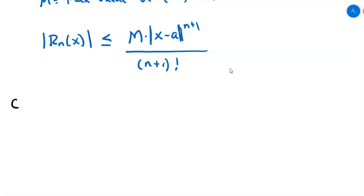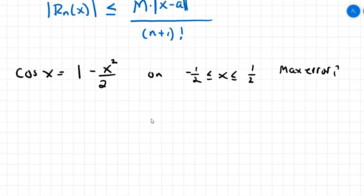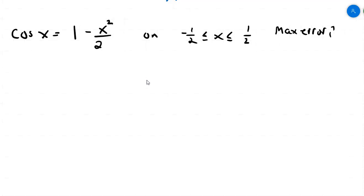So let's take a look at this example. Suppose cosine of x is approximated as 1 minus x squared over 2 factorial, on the interval from negative one-half to one-half. What is the maximum error on that interval? Now here's the funny thing: what degree polynomial is this? This is a second-degree polynomial, but it's also a third-degree polynomial, because the coefficient of x to the third is just zero. For the sake of doing remainder estimation problems, we consider this to be a third-degree polynomial — and that's important because it makes a difference in the calculations.